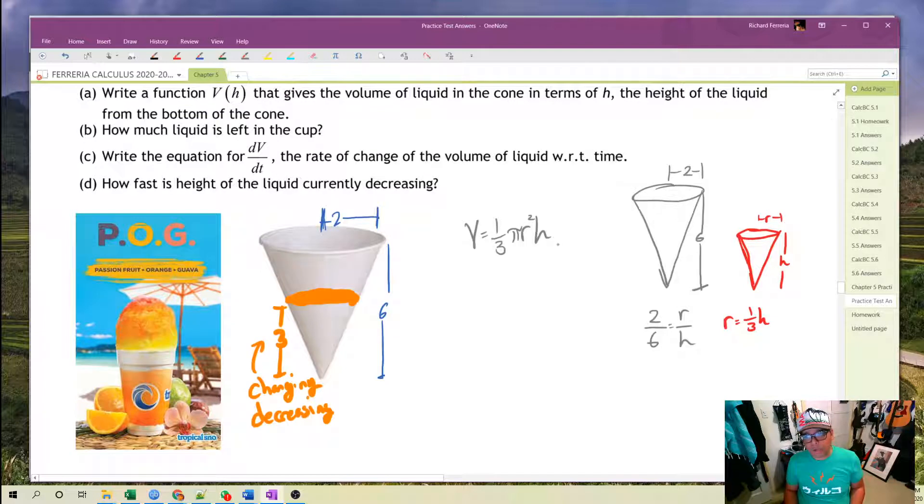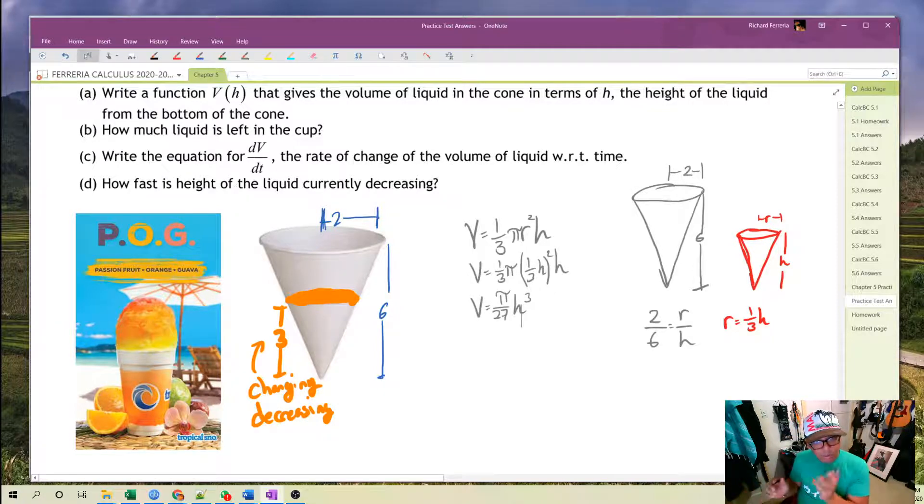Did I answer part a? No, I didn't. We need a formula for the volume of the cone in terms of h only. So we're going to simplify by substituting one-third h for r. This gives us an equation of pi over 27 h cubed. So that's my answer for part a.